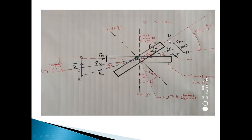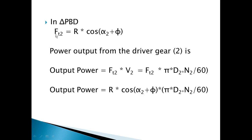For output power, I consider triangle BPD. The tangential force FT2 equals R·cos(α2 + φ). So output power equals FT2 into pitch line velocity of the output gear, which is πd2n2/60. Replacing FT2, output power equals R·cos(α2 + φ) into πd2n2/60, where d2 and n2 are the pitch circle diameter and RPM of gear number two.